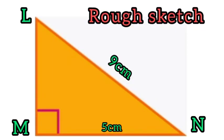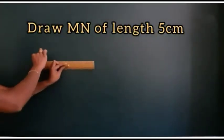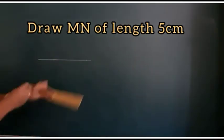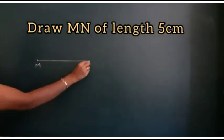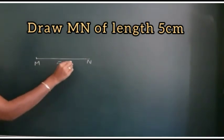At first draw a rough sketch and mark the measurements. Remember to mark the right triangle. Draw MN of length 5 centimeters and mark the points M and N at the ends. This is 5 centimeters.